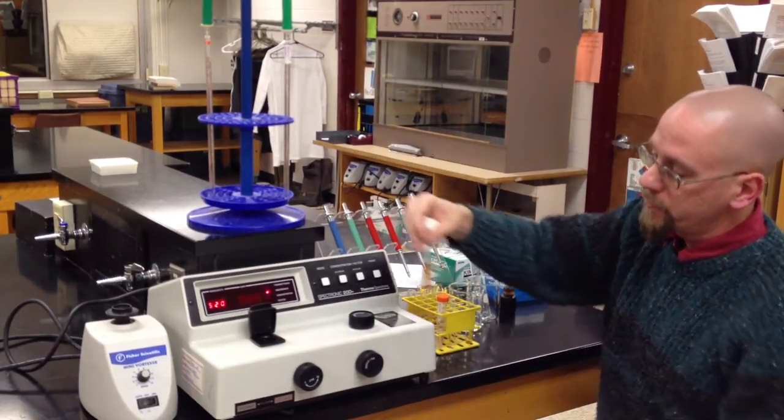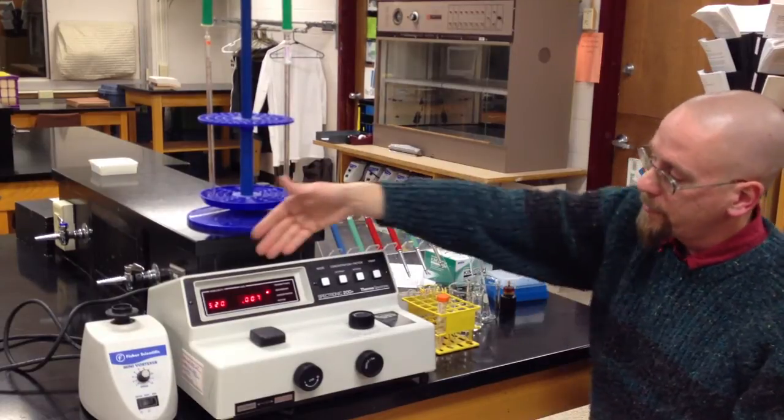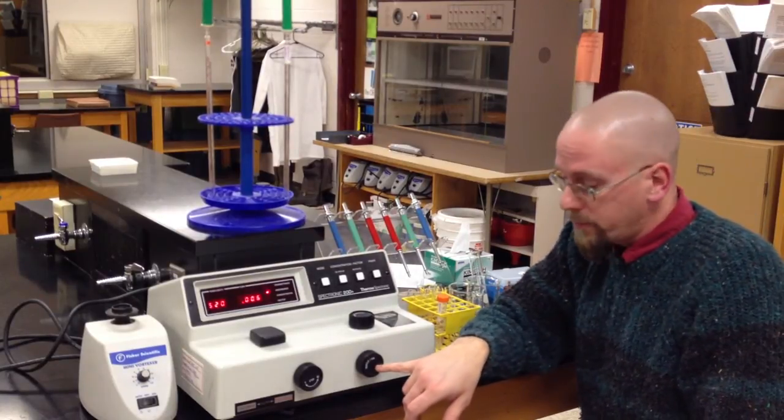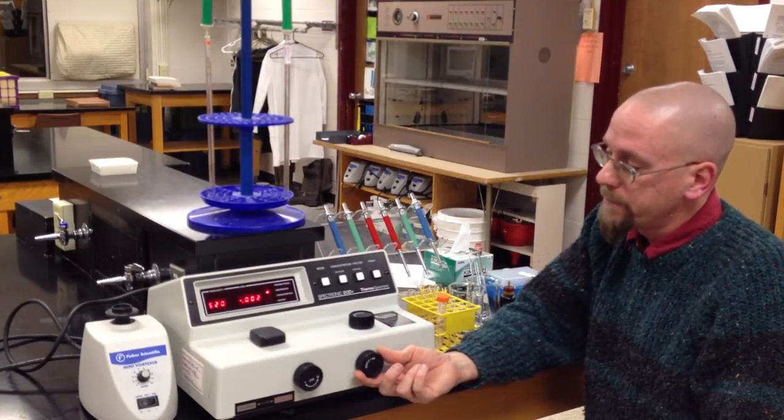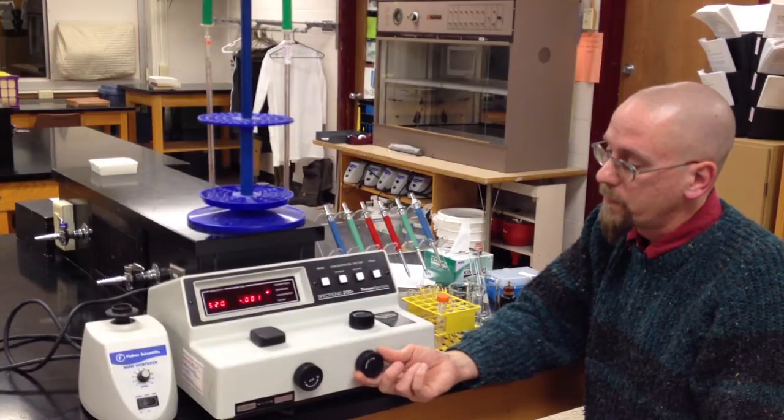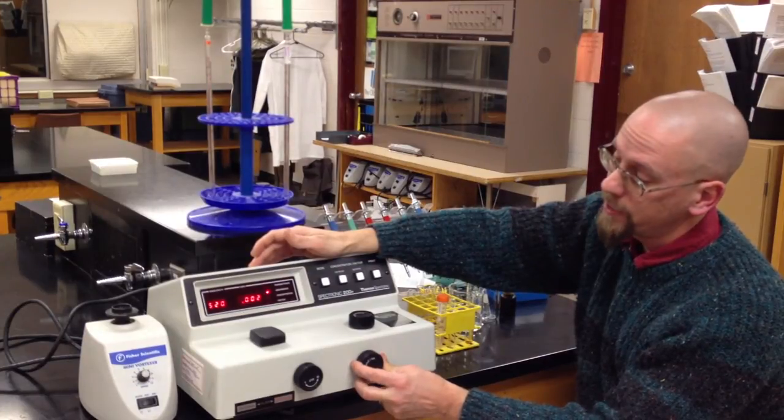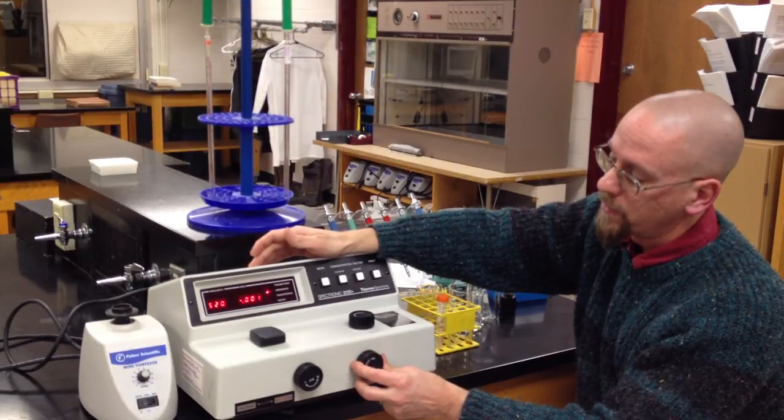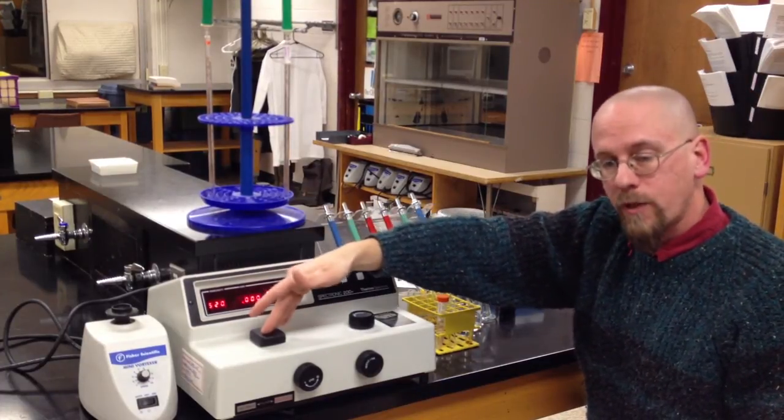So what we're going to do is take this, stick it down in the sample chamber with the score mark and the line lined up, close the lid, and now my absorbance changes. What you want to do is use this right knob and turn it to set the absorbance to zero. It's really sensitive. I've set the absorbance to zero with a blank that has water and iodine.